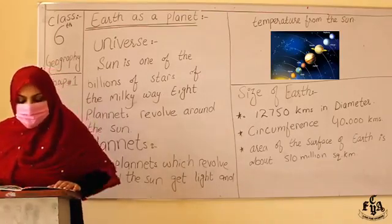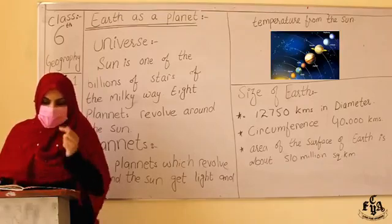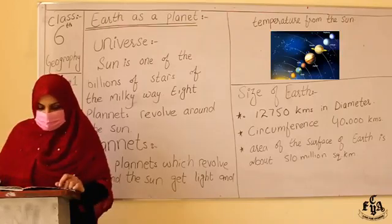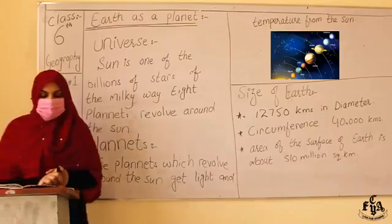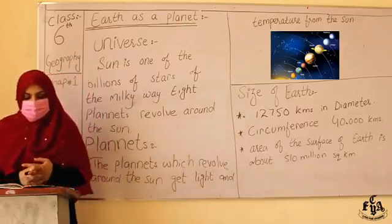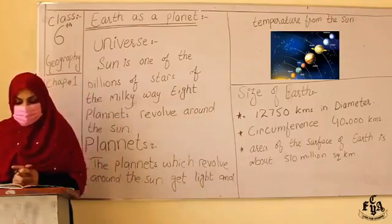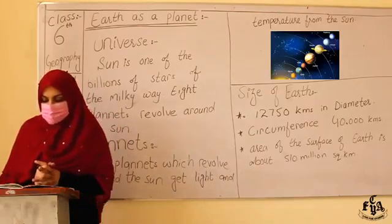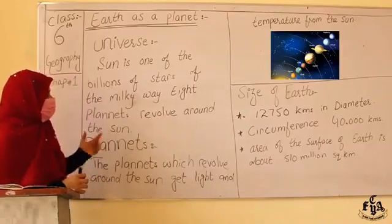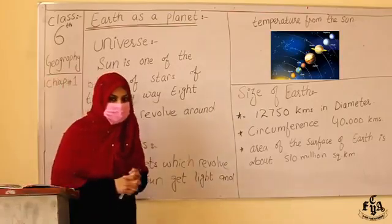The solar system originated about 4.5 billion years ago when a cloud of gases and dust began to spin. These gaseous materials began to cool with the passage of time and appeared in the shape of the solar system. The Sun is a bright star comprised of hydrogen and helium gases. The temperature of its outer surface is about 6000 degrees centigrade, and it is a source of light and heat for all the planets.